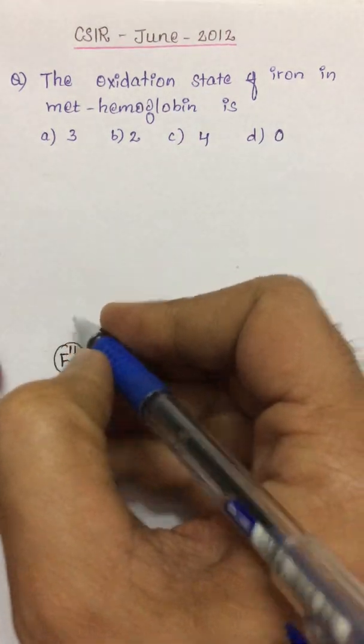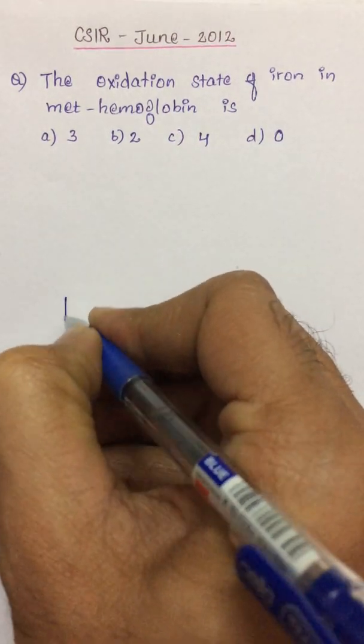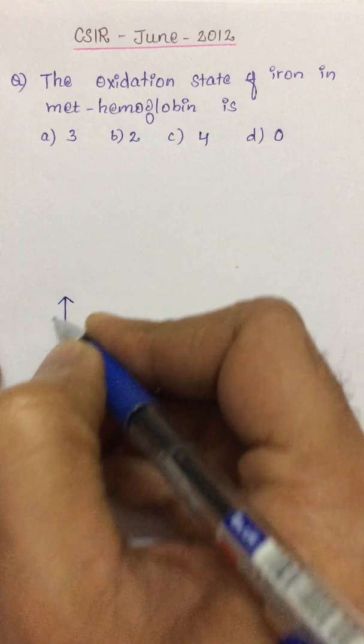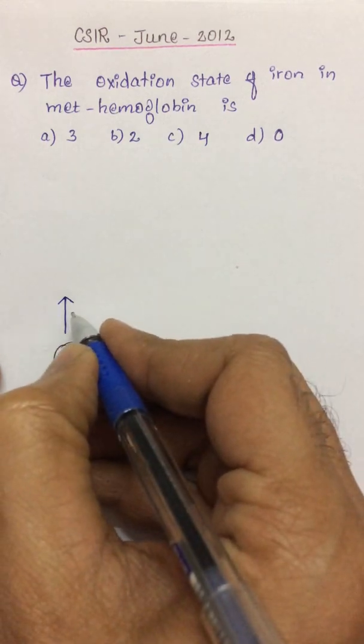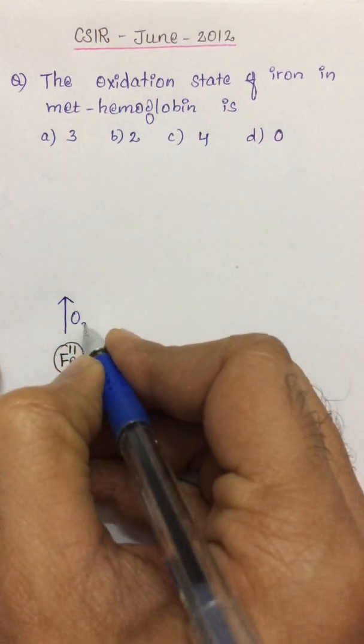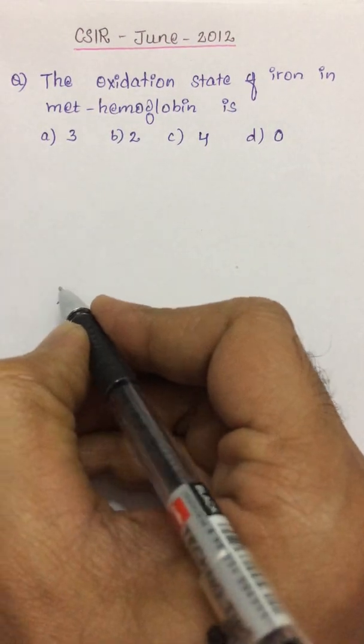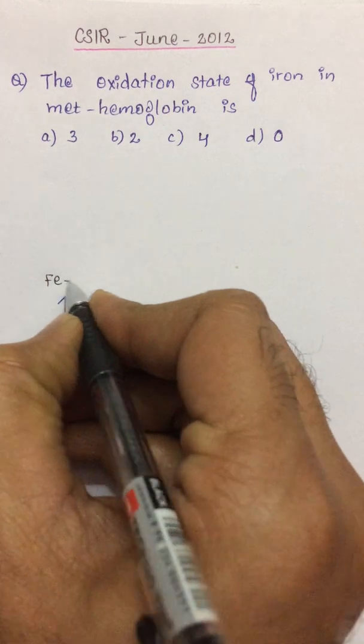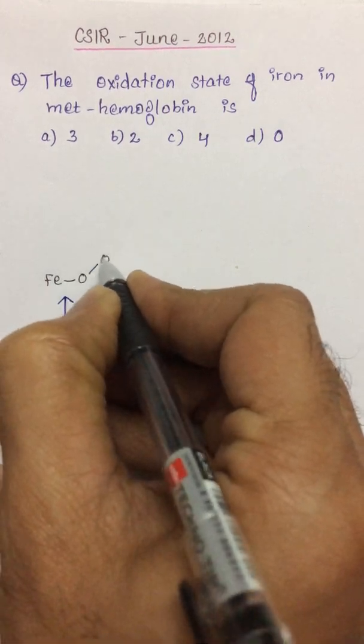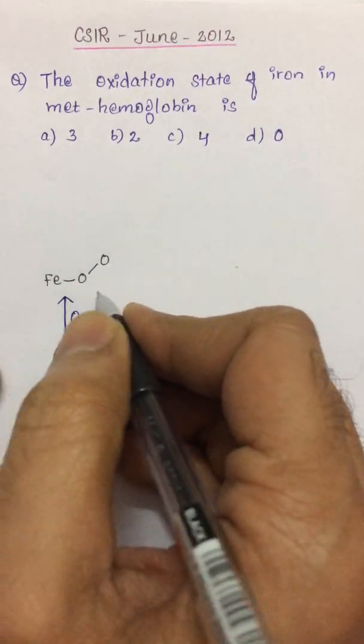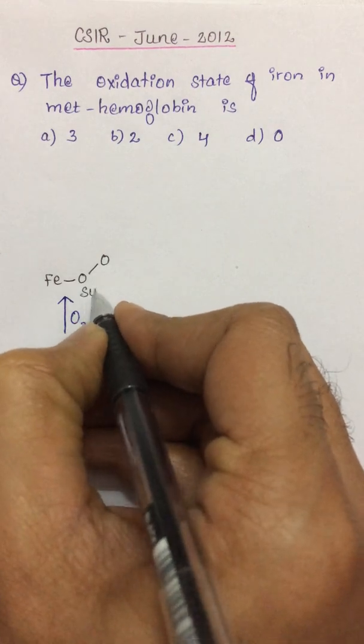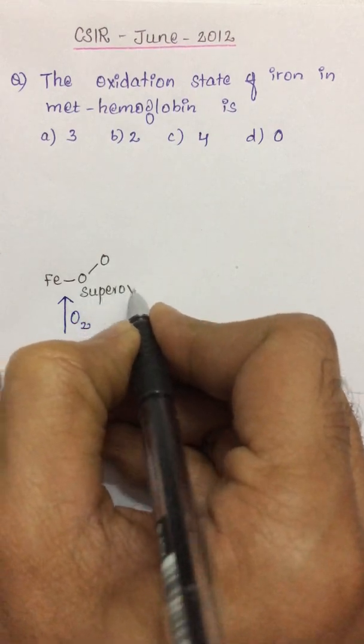So this is reacting with oxygen, or we say that it is dioxygen. Now once it reacts with dioxygen, a complex will form. This complex is called a superoxo complex.